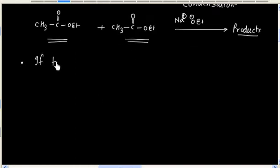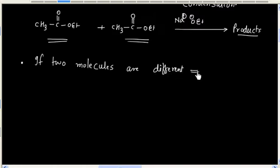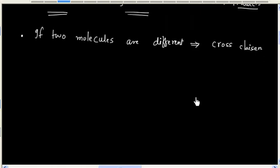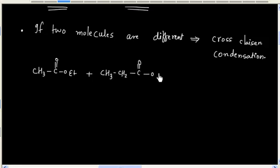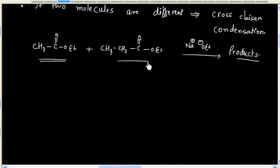If two molecules are different, we call this as a cross-Claisen condensation. For example, this reaction is an example of cross-Claisen condensation — in this case, both molecules are different.